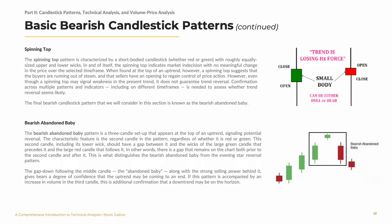The final bearish candlestick pattern that we will consider in this section is known as the bearish abandoned baby. The bearish abandoned baby pattern is a three-candle setup that appears at the top of an uptrend, signaling potential reversal. The characteristic feature is the second candle in the pattern, regardless of whether it is red or green. This second candle, including its lower wick, should have a gap between it and the wicks of the large green candle that precedes it and the large red candle that follows it. In other words, there is a gap that remains on the chart both prior to the second candle and after it. This is what distinguishes the bearish abandoned baby from the evening star reversal pattern. The gap down following the middle candle, the abandoned baby, along with the strong selling power behind it, gives bears a degree of confidence that the uptrend may be coming to an end. If this pattern is accompanied by an increase in volume in the third candle, this is additional confirmation that a downtrend may be on the horizon.